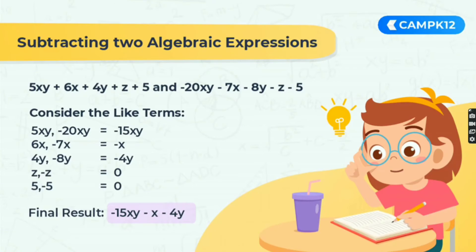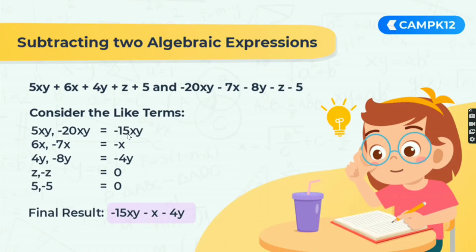Similarly, for subtraction: 5xy plus 6x plus 4y plus z plus 5, minus 20xy minus 7x minus 8y minus z minus 5. Considering like terms: 5xy minus 20xy gives minus 15xy, 6x minus 7x gives minus x, 4y minus 8y gives minus 4y, z minus z is 0, and 5 minus 5 is 0. The final result is minus 15xy minus x minus 4y.